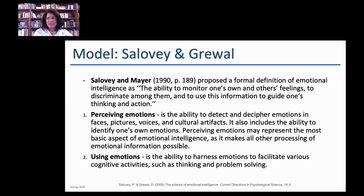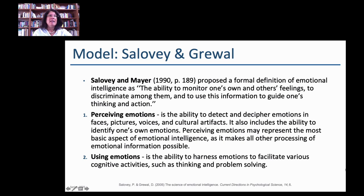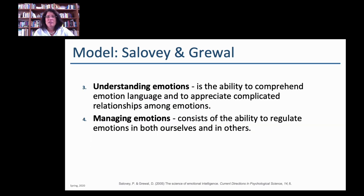Salovey and Mayer break this down slightly differently from Goldman. They say you have to perceive emotions — similar to Goldman — but then you have to use those emotions, to harness emotional states of others. This sounds a bit manipulative, but the idea is positive — like knowing when dad is in the right mood to ask him for $10. Then there's understanding the other person's emotions and managing them as well. So you still need self-awareness, self-regulation, motivation, empathy, and social skills.